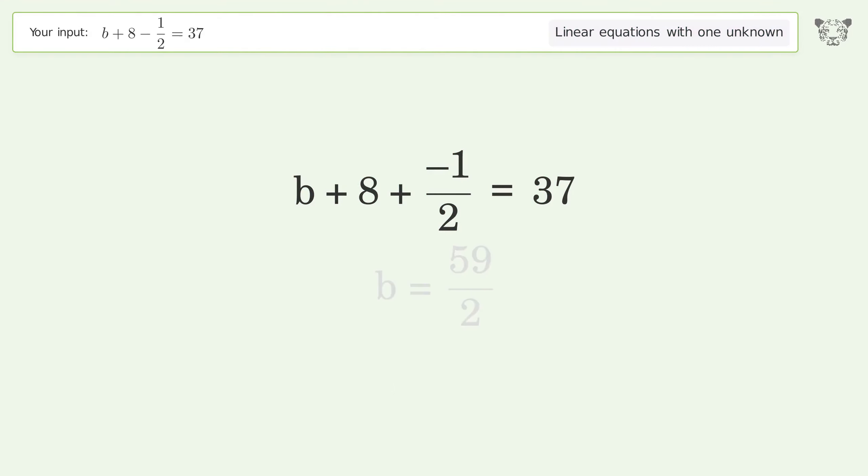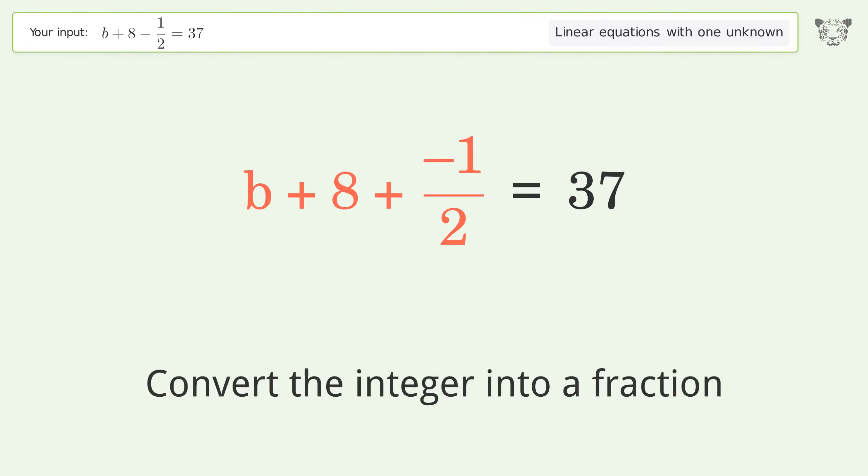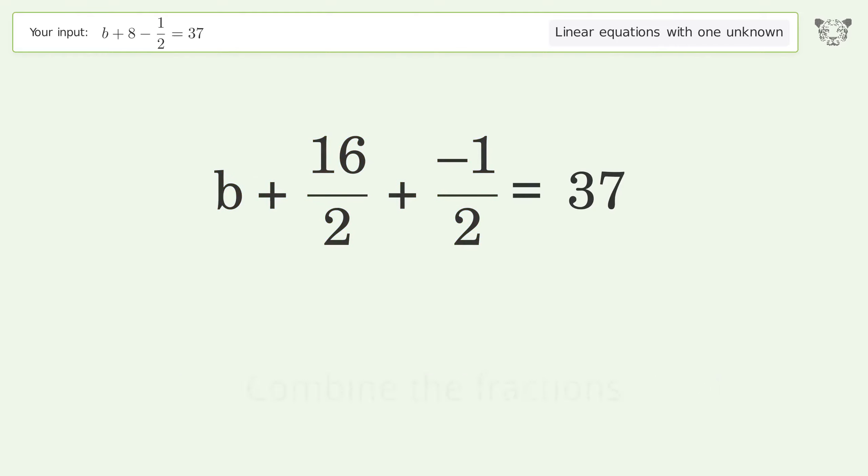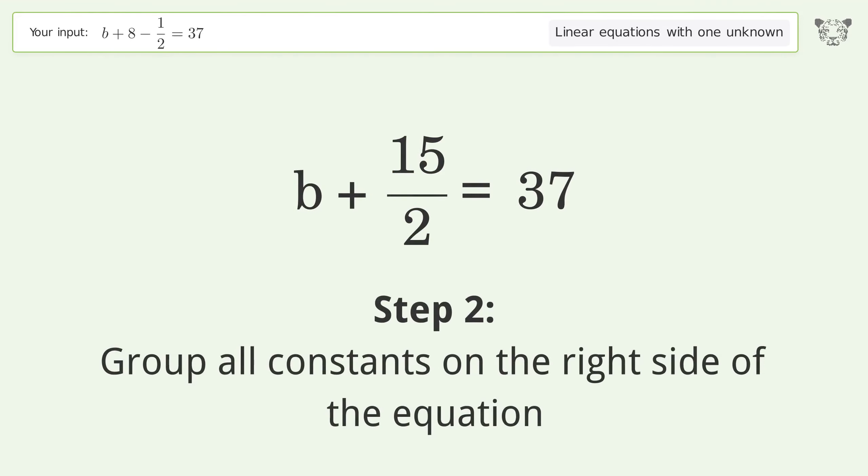You asked Tiger to solve this problem, which deals with linear equations with one unknown. The final result is b equals 59 over 2. Let's solve it step by step. Simplify the expression, convert the integer into a fraction, and combine the fractions.